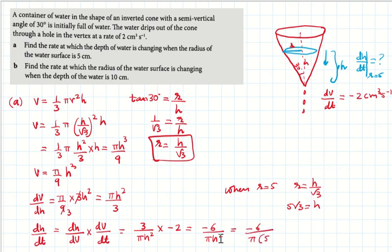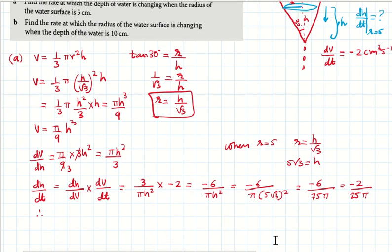Substitute h = 5√3 into dh/dt = -6/(π(5√3)²) = -6/(π × 25 × 3) = -6/(75π) = -2/(25π). Therefore, the rate of change of height is -2/(25π) centimeters per second when the radius is 5.